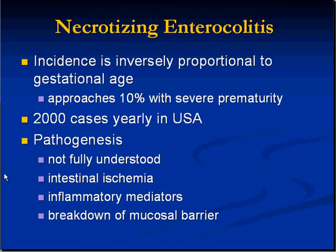A very important consideration in newborns is necrotizing enterocolitis, a very serious and often fatal disease. There's about a 10% incidence here, and mortality rates are very high — there are about 2,000 cases in the U.S. The pathogenesis is not really quite understood, but the theories that always come out are ischemia of the intestine and inflammatory reactions which might result in breaking down of the mucosal barrier. Once that mucosal barrier is broken down in the bowel, you then have organisms which are going to wreak havoc.